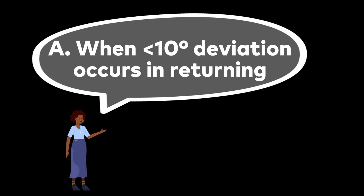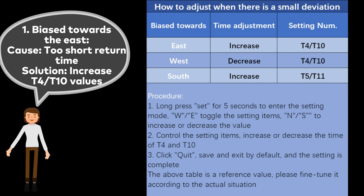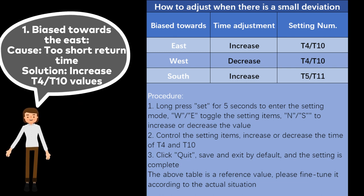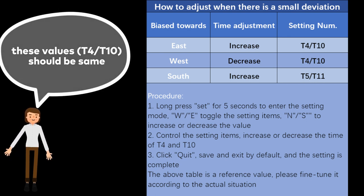a. When less than 10 degrees deviation occurs in returning. 1. Bias towards the east, cause: too short return time, solution: increase T4/T10 values. These values, T4/T10, should be same.